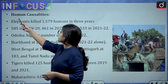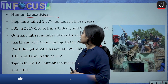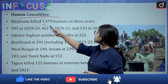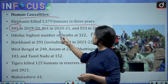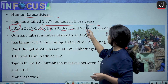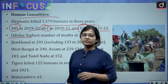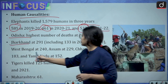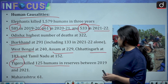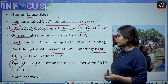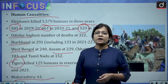It is not that only animals are dying — there is also loss of human life. Elephants have killed 1,579 humans in the last three years: 585 in 2019-20, 461 in 2020-21, and 533 in the following year. Maximum deaths have taken place in Odisha, followed by Jharkhand, West Bengal, Assam and Chhattisgarh. Tigers have killed 125 humans in reserves between 2019 and 2021, with maximum deaths reported in Maharashtra.